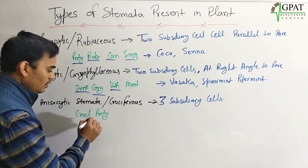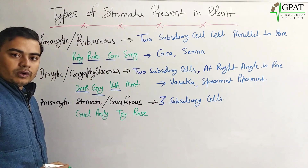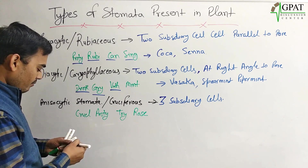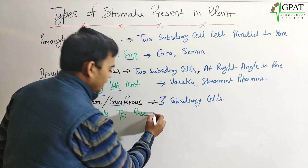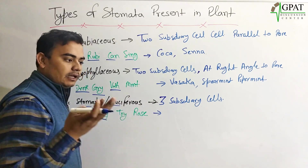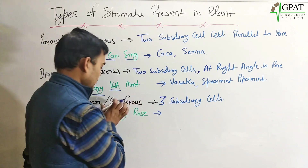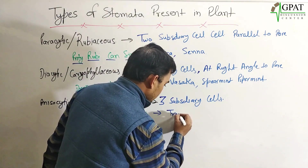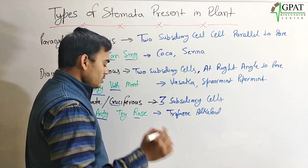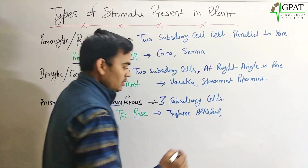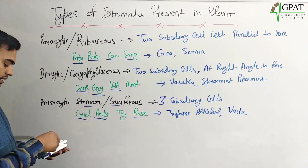The trick for anisocytic stomata is: 'Cruel auntie, tri rose.' Here, 'cruel' stands for cruciferous, 'auntie' for anisocytic, 'tri' for three subsidiary cells, and 'rose' for Vinca roseus. Examples include the tropane alkaloids like Belladona, Datura, Henbane, and also Vinca roseus. All these have anisocytic stomata.